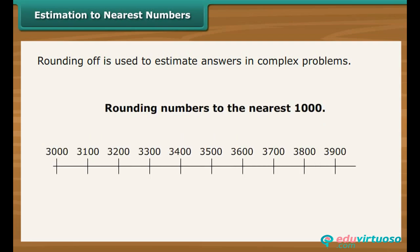Rounding numbers to the nearest thousand means finding which thousand they are nearest to. For example, 3,800 rounded to the nearest thousand is 4,000.